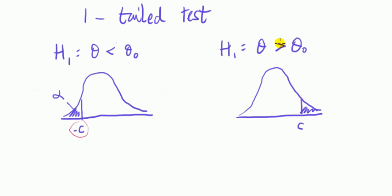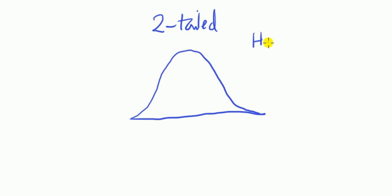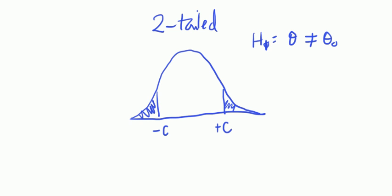If the alternative hypothesis states that the parameter is bigger than some number, then we look at the right tail. In that case, the critical value will be a positive number, and the shaded region will be alpha. For a two-tailed test, H1 will be of the form that the parameter does not equal a number. The critical values will be minus C and plus C, and the shaded region adds up to alpha — half in each tail. So if alpha is 5%, it's 2.5% in each tail.